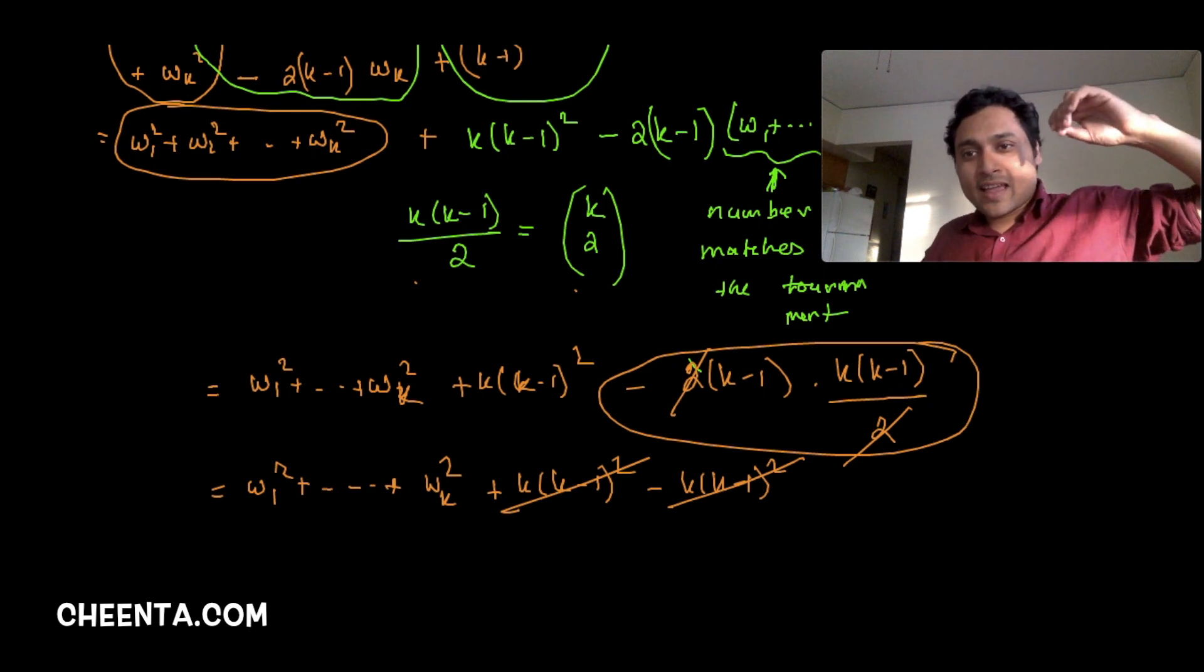Okay. So now let's do the final shot. Maybe we can finish it off. This is equal to W1 square up to Wk square plus K times K minus 1 whole square. And now we have negative 2 times K minus 1. And this sum of the wins is K choose 2 which is K times K minus 1 over 2. So 2 cancels and this is precisely what we wanted. So this is equal to W1 square up to Wk square plus K into K minus 1 whole square. And this is also negative K into K minus 1 whole square. So these 2 cancels off and we are done. So L1 square up to Lk square is equal to W1 square up to Wk square.